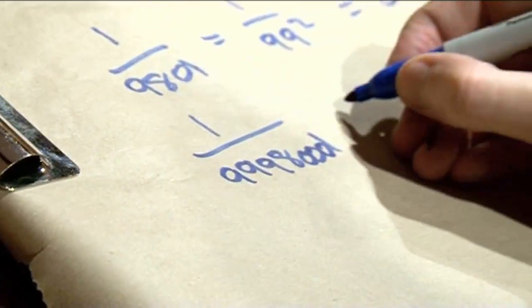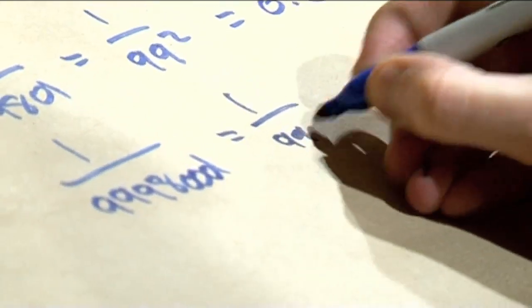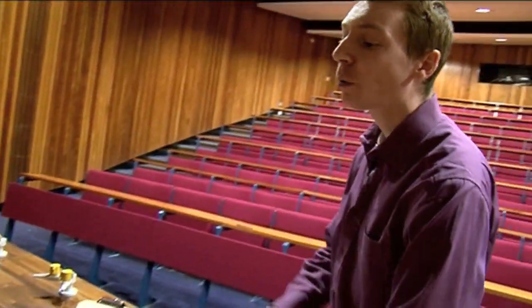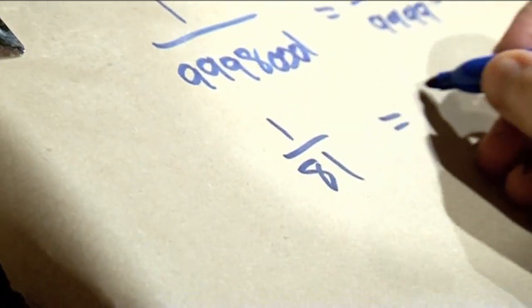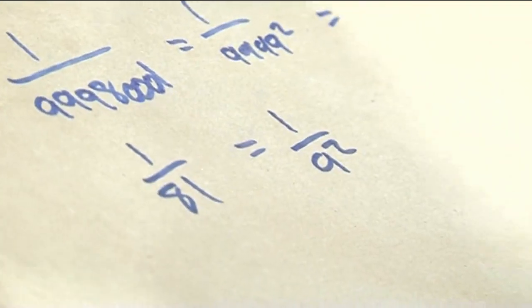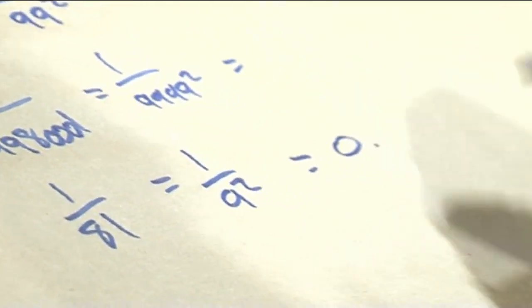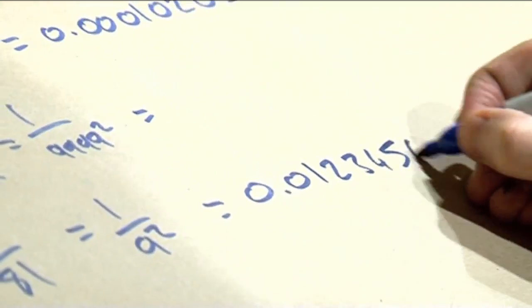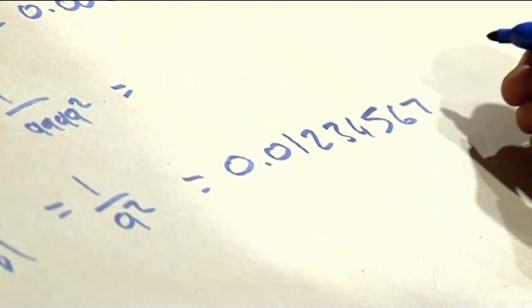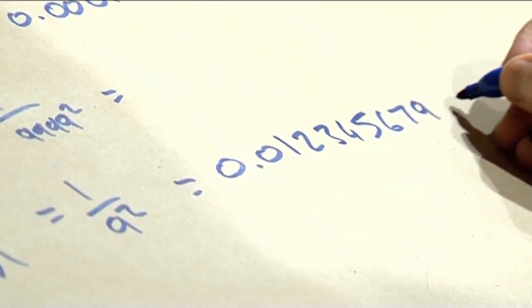Similarly, 1 over 9,999 squared gives all four-digit numbers. The simplest example is 1 over 9 squared, which is 1 over 81. That gives you all the one-digit numbers: 0.012345679 — it misses 8 — then back to 0 again, repeating that pattern.